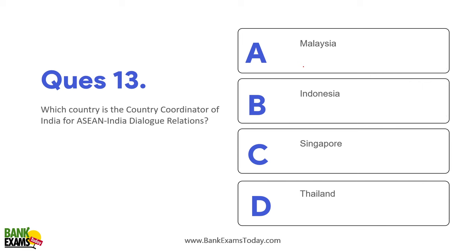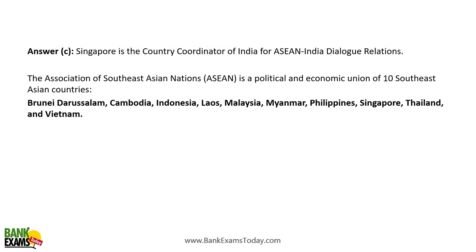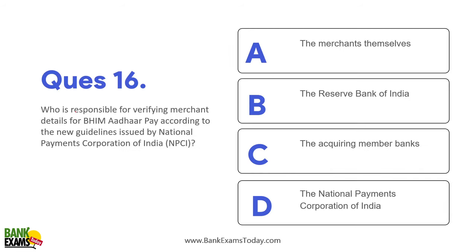Which country is the country coordinator of India for ASEAN-India dialogue relations? The coordinator country is Singapore. You should also know the ASEAN countries — the Association of Southeast Asian Nations has 10 Southeast Asian countries: Brunei, Cambodia, Indonesia, Laos, Malaysia, Myanmar, Philippines, Singapore, Thailand, and Vietnam. Singapore is the country coordinator for India.